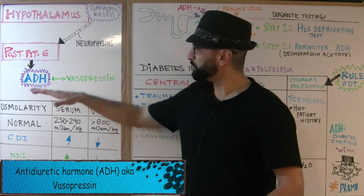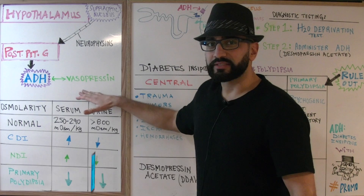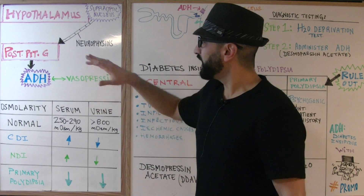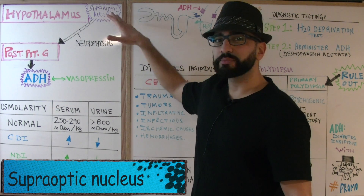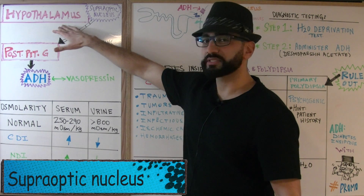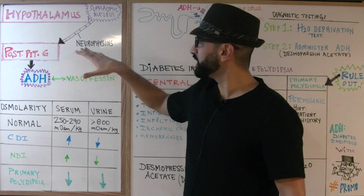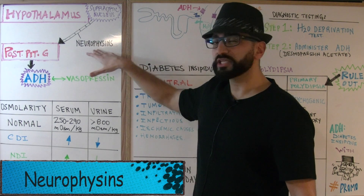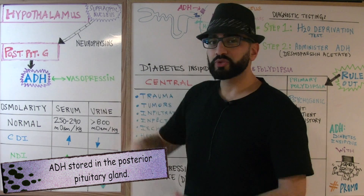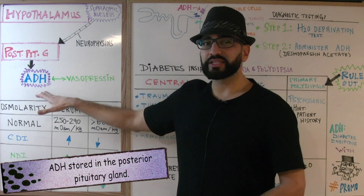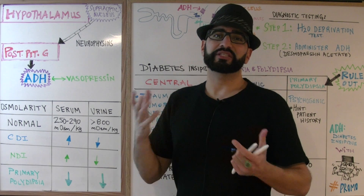Antidiuretic hormone, abbreviated ADH, is also called vasopressin — don't forget that. ADH is produced in the supraoptic nucleus of the hypothalamus. It is brought to the posterior pituitary gland by specialized channels called the neurophesins. So in the posterior pituitary gland, that's where this ADH vasopressin is stored, and it's going to stay there until it's actually needed.